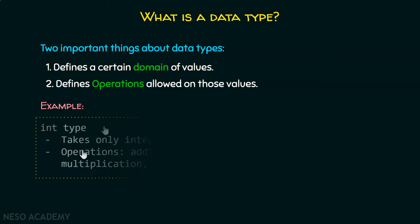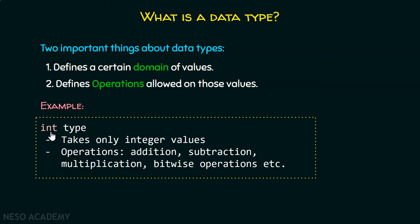For example, we can think of integer type. It allows only integer values. The operations allowed are addition, subtraction, multiplication, bitwise operations, etc. We can perform almost every operation with integer type.